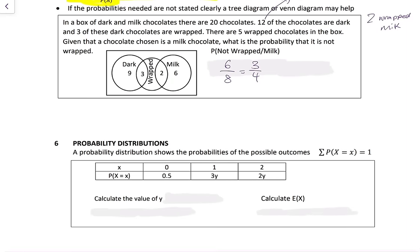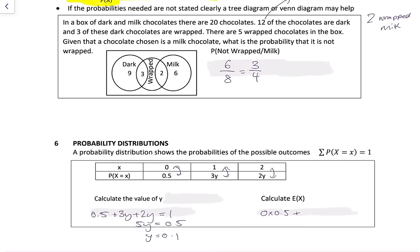Probability distributions show probabilities of all possible outcomes, and the sum of all probabilities equals 1. To find y: add all probabilities and set equal to 1, giving 5y = 0.5, so y = 0.1. To calculate E(X), multiply each outcome by its probability and sum: 0 × 0.5 + 1 × 0.3 + 1 × 0.2 (since y = 0.1) + 2 × 0.2 = 0.3 + 0.4 = 0.7.